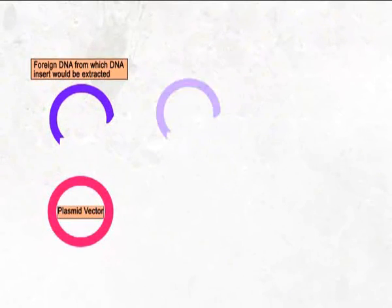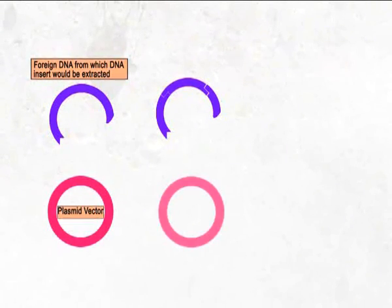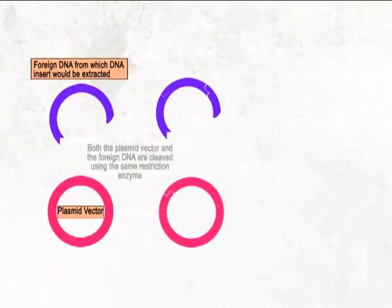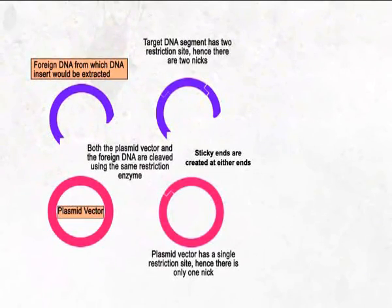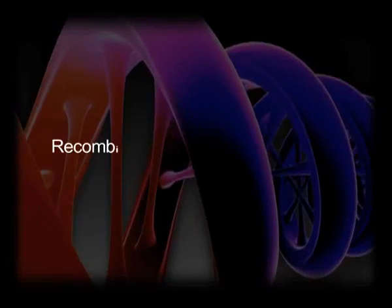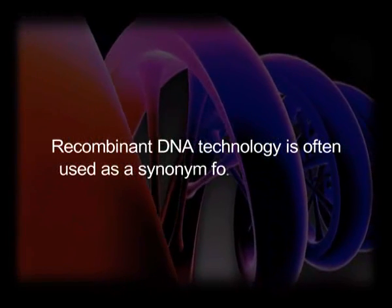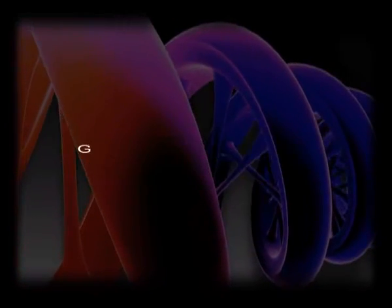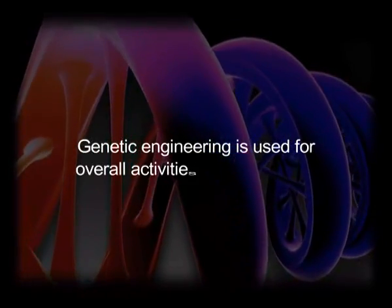The vector plus gene of interest is called recombinant DNA, and the steps involved in creation of recombinant DNA are collectively called recombinant DNA technology or genetic engineering. The steps concerned with transformation of a suitable host with recombinant DNA and multiplication of the transformed host is called DNA cloning or gene cloning. Recombinant DNA technology is often used as a synonym for gene cloning, and a popular term called genetic engineering is used for all activities in gene cloning.